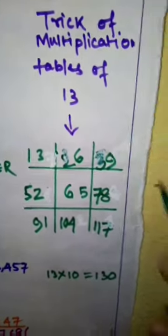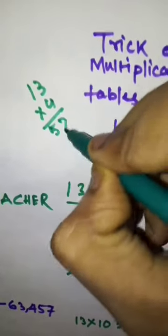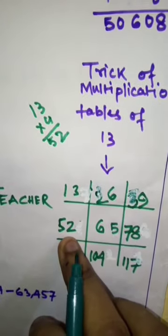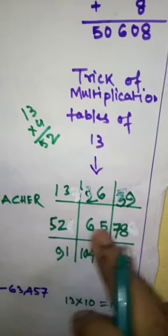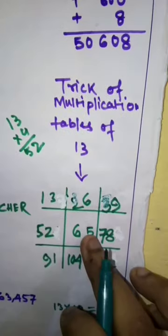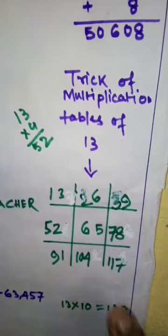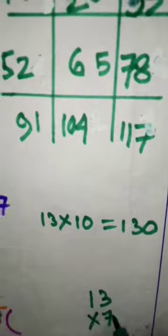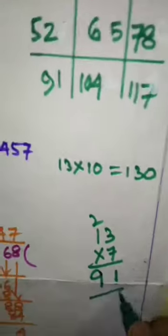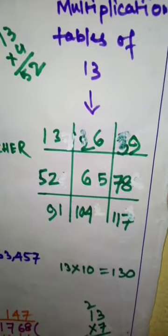Now you see that this is the table of 13. You choose any number, 13 into 4, how much do you get? 52. See the 4th step, you have got 52. We will begin from here, in this manner we will move: 13 into 1, 13 into 2, 13 into 3, and so on. You choose any other number, 13 multiplied by 7, suppose you will get 7, 3 is 21, carry 2, 7, 1 is 7 and here you will get 9. See that in the 7th step we have got 91. So in this way you can write the tables of 13 very easily.